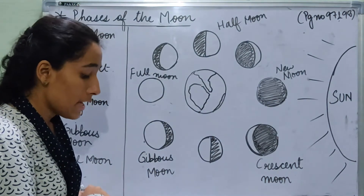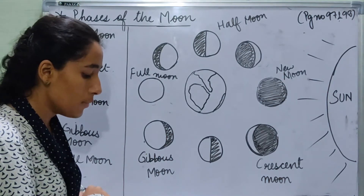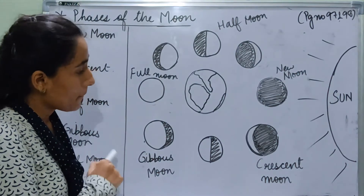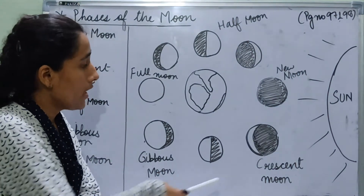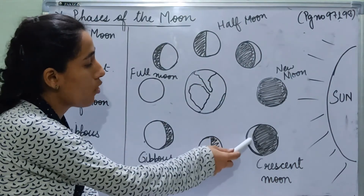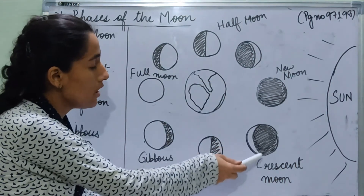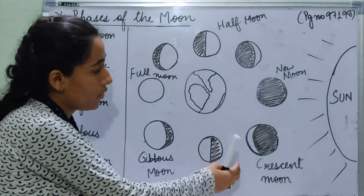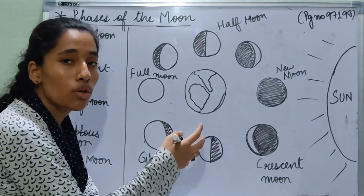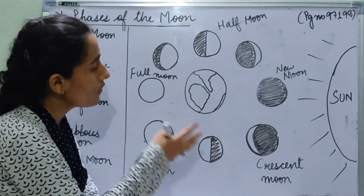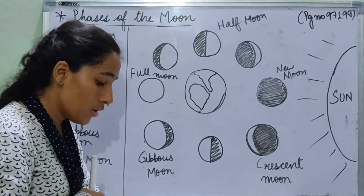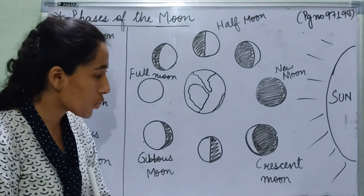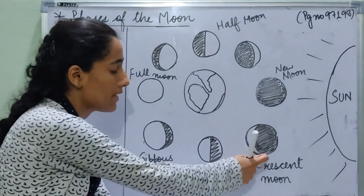Now the crescent moon. In this phase, a small portion of the illuminated side of the moon is facing towards the earth. A very small illuminated side is facing towards the earth because the other portion of the illuminated side is not facing the earth. So only a small portion of the moon can be seen from the earth — it is called a crescent because it is in the shape of a crescent.